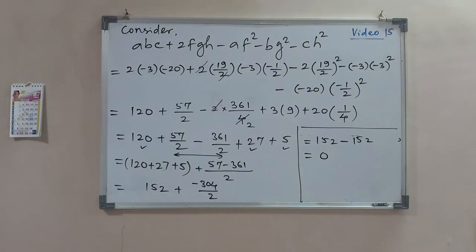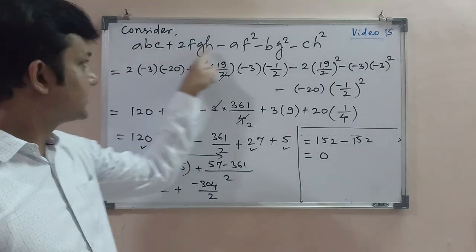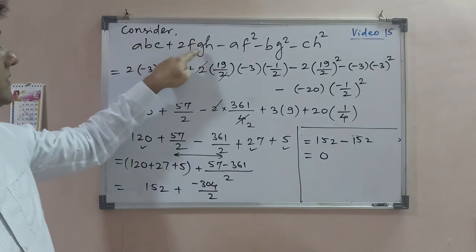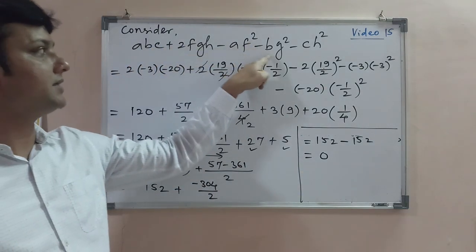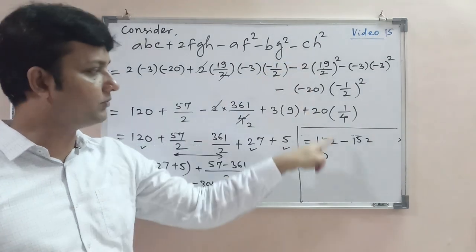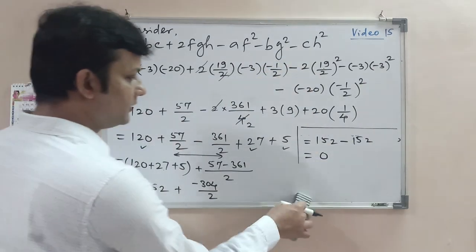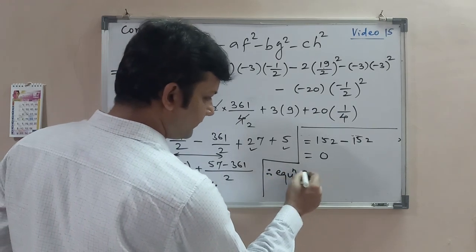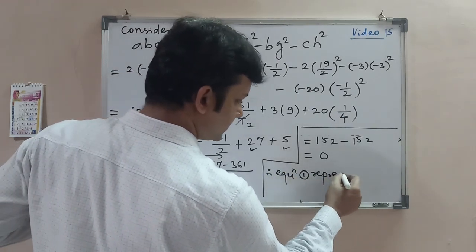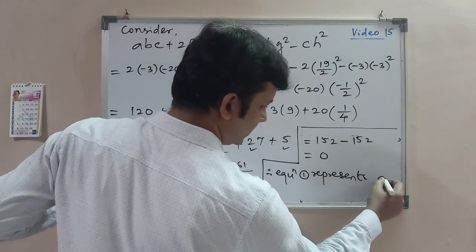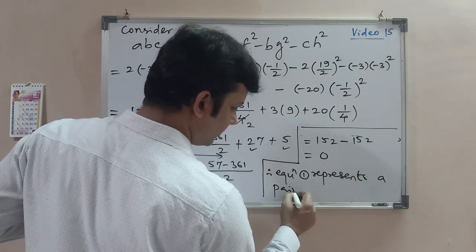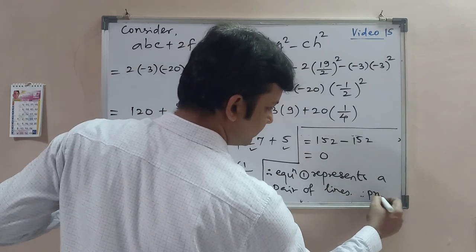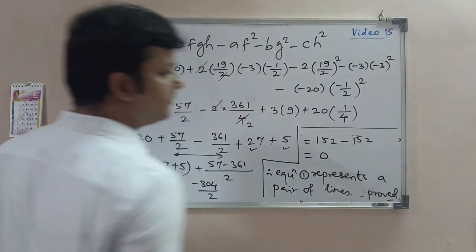So 0 means this condition is satisfied. The value of abc + 2fgh - af² - bg² - ch² equals 0. So we can say that equation 1 represents a pair of lines. Hence proved.